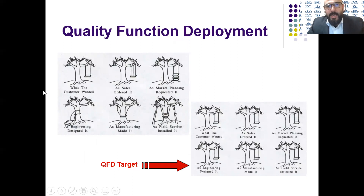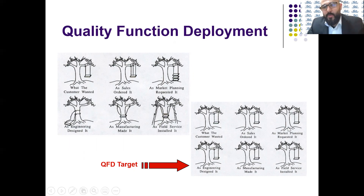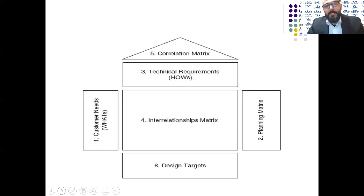As you can see, a cross-functional team lets everybody — the sales, the marketing, the engineering, the manufacturing, the field services — know exactly what the customer wants and be on the same page.